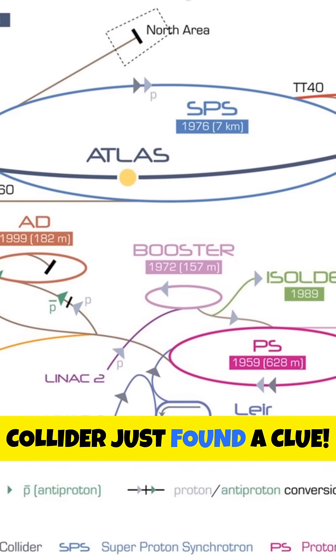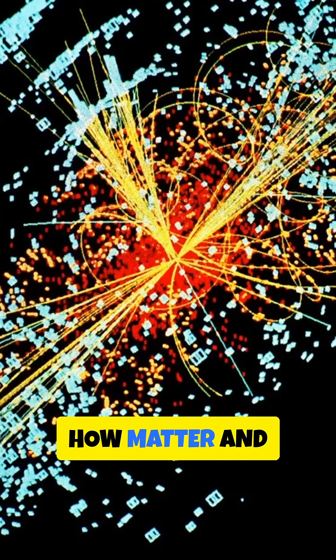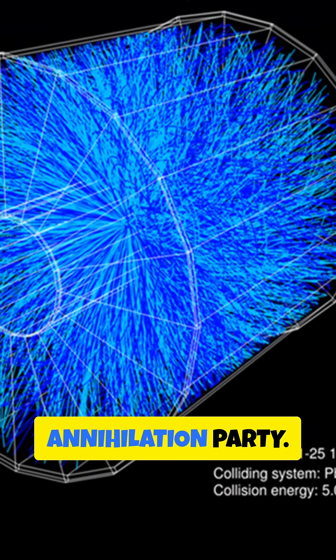The Large Hadron Collider just found a clue. By smashing particles at near light speed, physicists detected a 2.45% difference in how matter and antimatter decay. This tiny asymmetry could explain why matter survived the Big Bang's annihilation party.